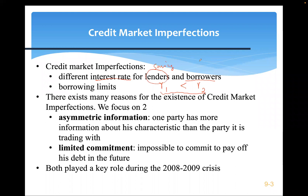Another market imperfection shows up as a borrowing limit — there's a certain amount you can borrow from the bank or financial institutions. There are many reasons for this imperfection, and we'll focus on two. First is asymmetric information: if you're doing trade or business with somebody, one party usually has more information than the other regarding the goods being traded. A famous example is the used car market.